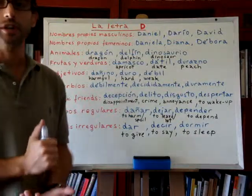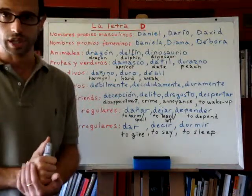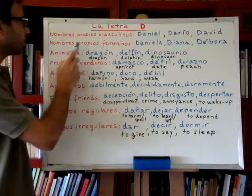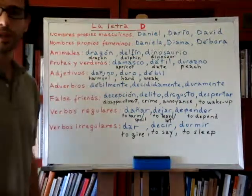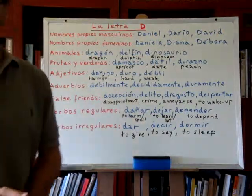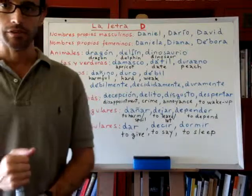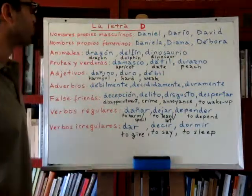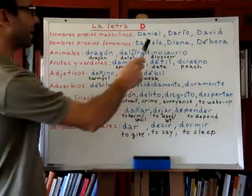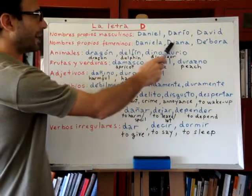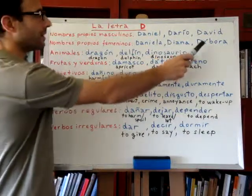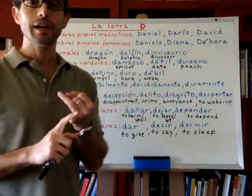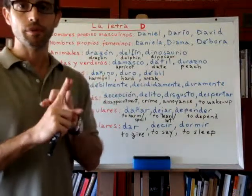Those three are very common Spanish names. For nombres propios femeninos — feminine given names that begin with the letter D — we have Daniela, Diana, Débora.